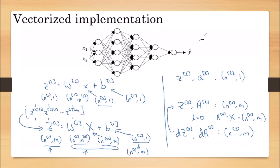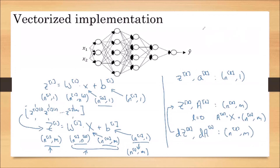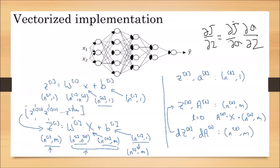We already discussed the differentiation of the cost function for the sigmoid function: DZ of the output layer (e.g., layer 3) equals A3 minus Y — we already derived this. DZ denotes the differentiation of the cost function with respect to Z. To find it, we first find the differentiation of the cost function with respect to A, then multiply by the differentiation of A with respect to Z, giving us dC/dZ.